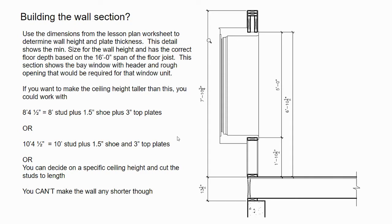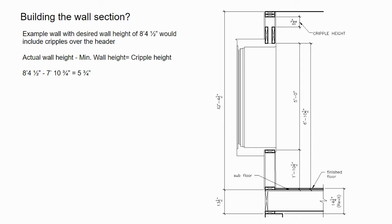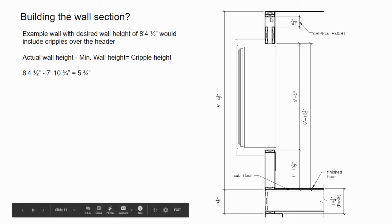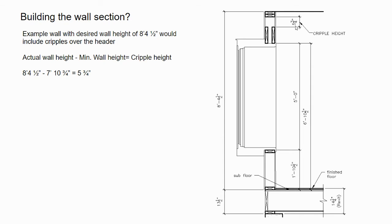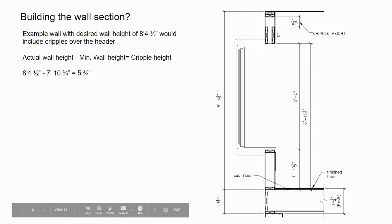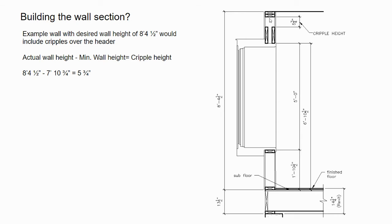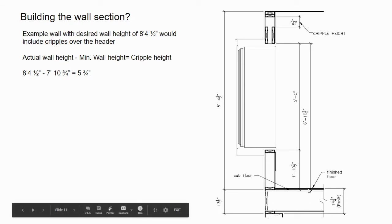With a wall height of 8 feet 4½ inches, we incorporate cripples above the header. The cripple height equals the chosen wall height minus the minimum wall height. If we maintain the same head and sill heights, the header stays at 6 feet 10½ inches, and the cripple height is the difference. In Revit, the numbers still add up going from finish floor to top of concrete, adding ¾ inch to the 13½ inches — making it 14¼ inches if using the same floor framing.